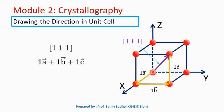From the origin, we will draw first 1 a-bar, then we will add 1 b-bar to it. How are vectors added? The tail of the vector is attached to the head of another vector. So 1 a-bar plus 1 b-bar, and then 1 c-bar is added to that. This is the final point. We draw the resultant vector from the origin. This is our direction [1 1 1] — the vector 1 a-bar plus 1 b-bar plus 1 c-bar drawn from origin.